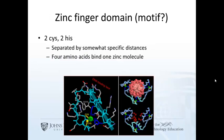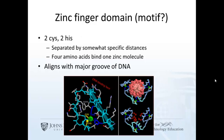Here is an example of a domain or motif: the zinc finger domain. Usually it's called a domain, but by size it's closer to a motif. There are four important amino acids: two cysteines and two histidines — three of one and one of the other often works as well. Those four amino acids surround and bind a zinc ion. That structure allows the protein to align with the major groove of DNA. Many, but not all, DNA binding proteins have this motif.